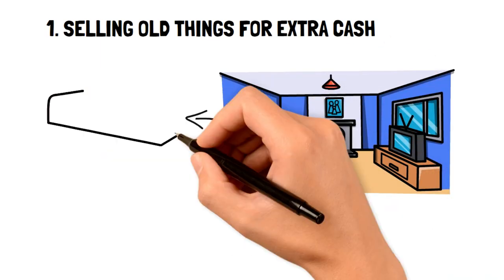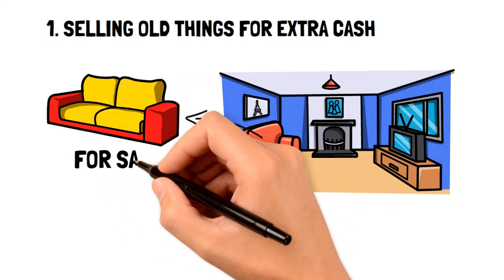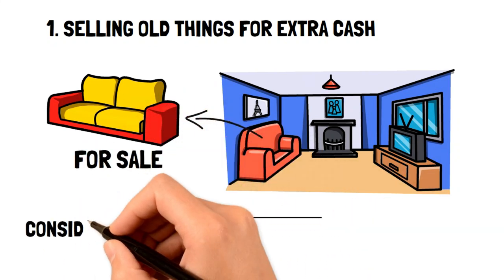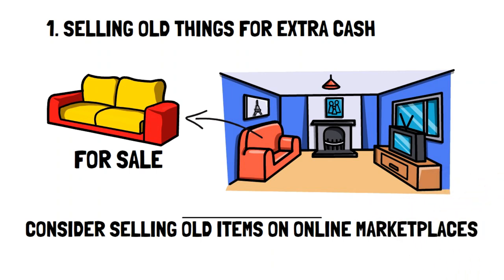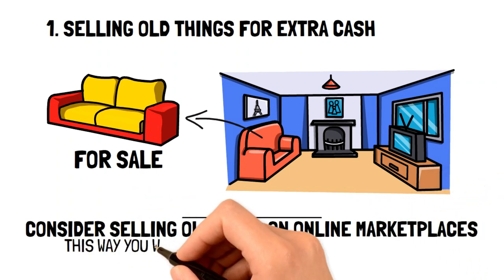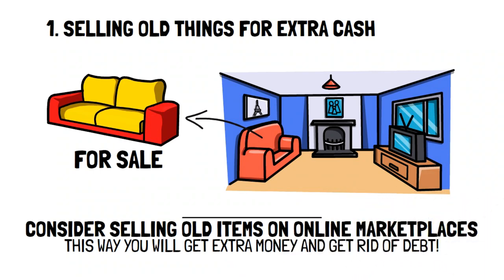If you have some old items like clothes, furniture, toys, or electronics that you're never planning to use, then consider selling them on online marketplaces to get some extra cash. This easy and quick tip can help you get rid of debt, especially if you want to pay off a large chunk quickly.